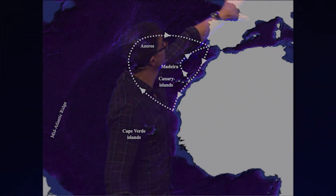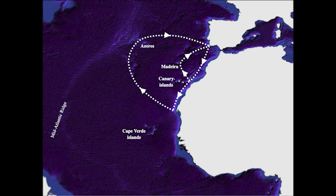You complete what the Portuguese called a volta do mar — a return of the sea. And when they headed further down the West African coastline, this huge loop through the ocean they had to steer to get back home again took them across the Azores.